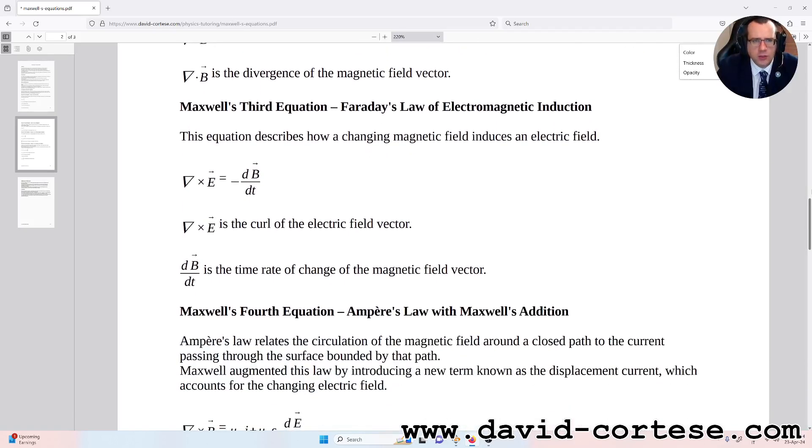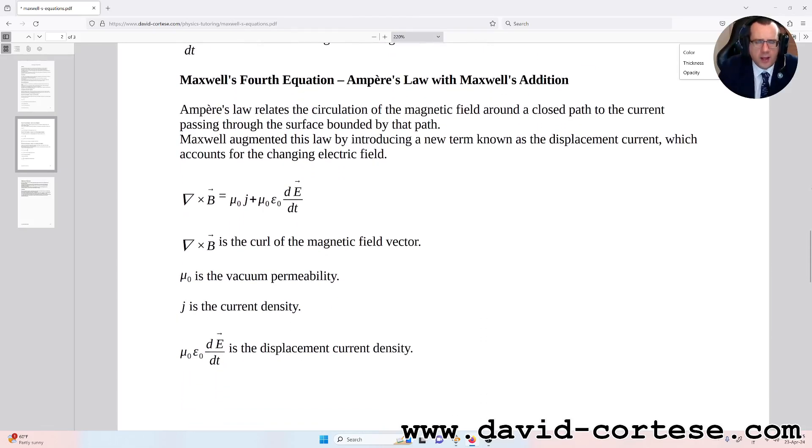Maxwell's third equation: Faraday's law of electromagnetic induction. This equation describes how a changing magnetic field induces an electric field. Nabla vector product E equals minus dB over dt, where nabla vector product E is the curl of the electric field vector. dB over dt is the time rate of change of the magnetic field vector.